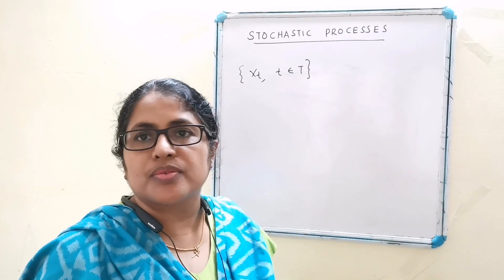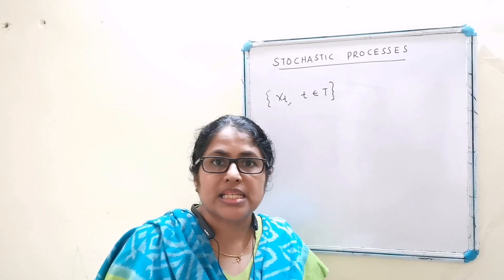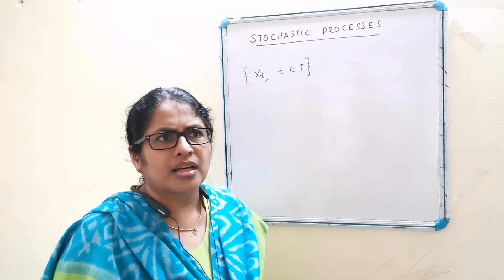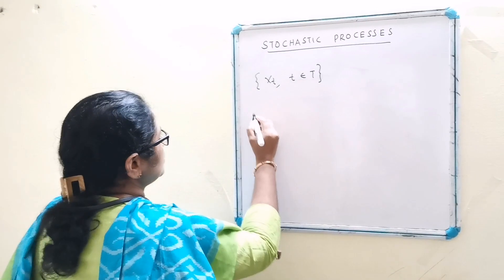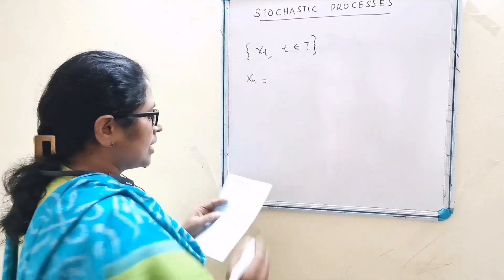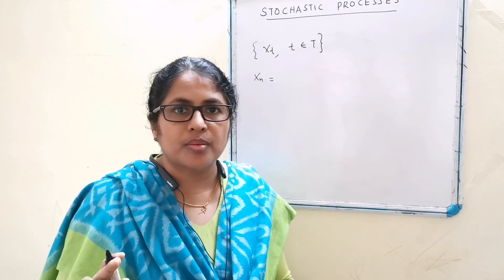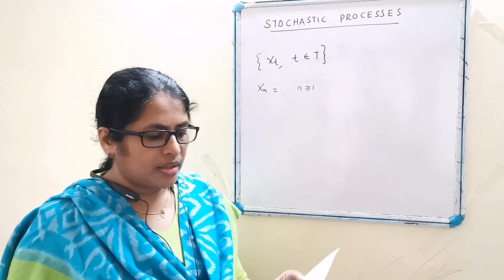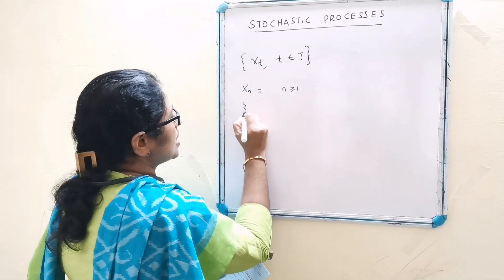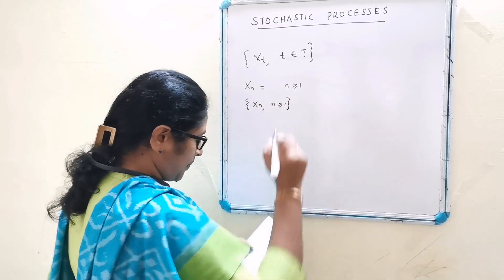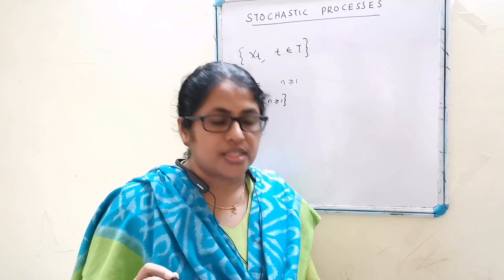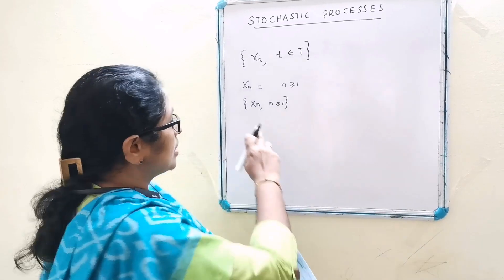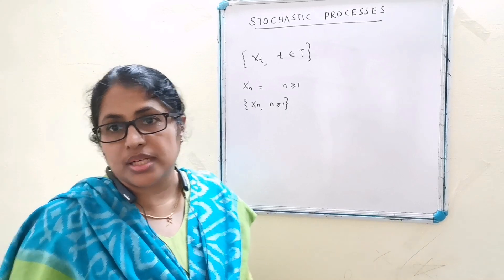Now let's consider some examples of stochastic process. Consider a simple experiment like drawing from an unbiased die. Suppose x(n) is the outcome of the nth draw, where n ≥ 1. Then the sequence {x(n), n ≥ 1} is a family of random variables such that for any distinct values of n = 1, 2, 3, etc., one gets a distinct random variable x(n). Therefore, the sequence {x(n), n ≥ 1} constitutes a stochastic process.